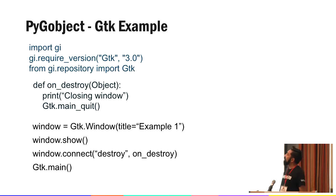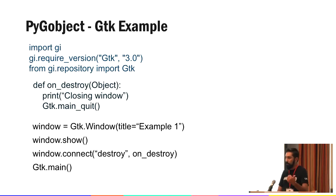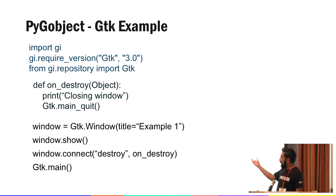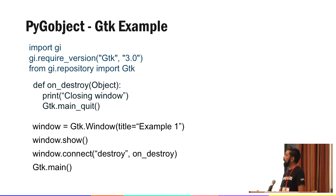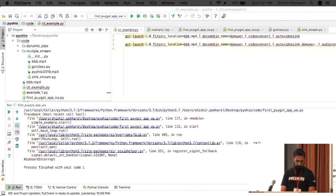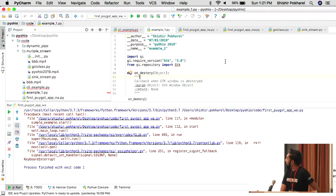Here is a simple example of how GTK code is written in Python. The first thing is to import GI — GObject Introspection — and specify which GTK version we want. Then we do the actual import of GTK. This is the code flow to open a GTK window. It's a simple example to show how PyGObject is imported into plain Python code and executed.